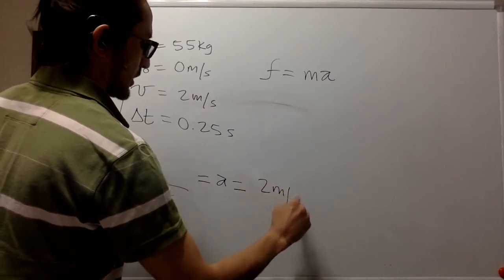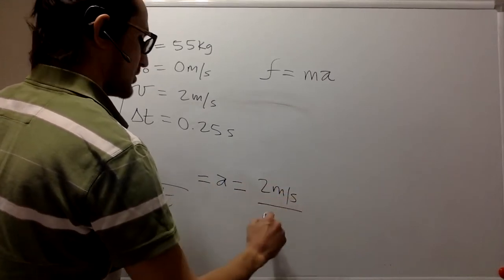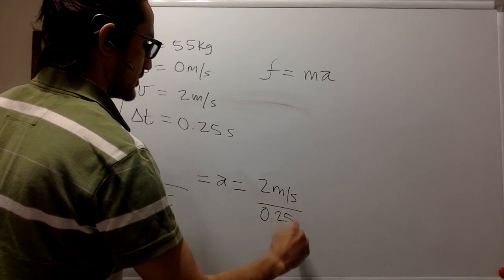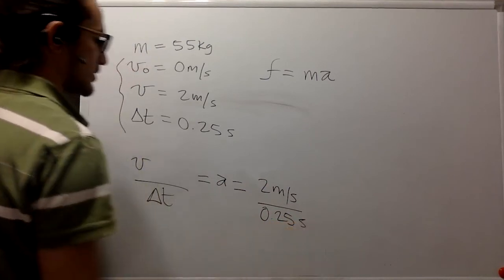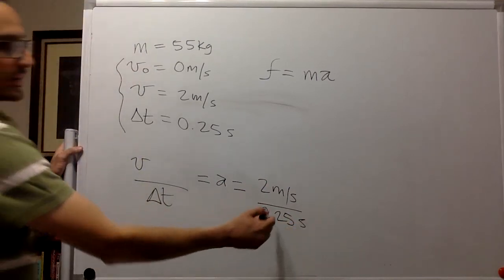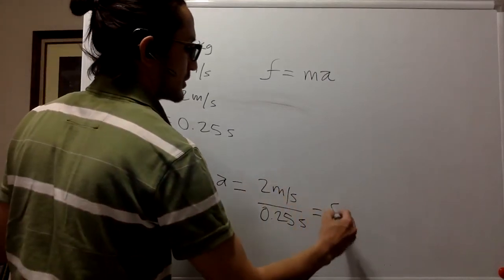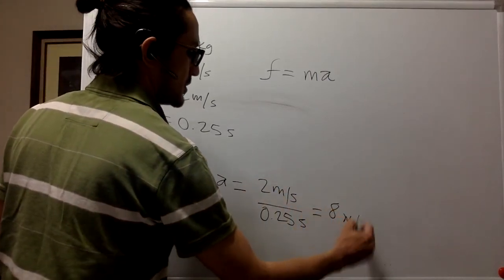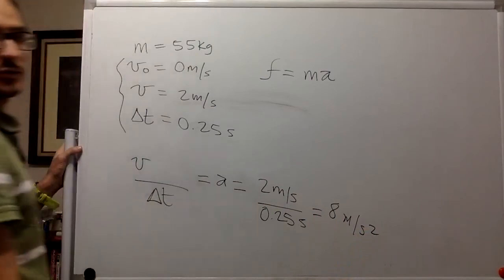So that's two meters per second divided by 0.25 seconds. This is one fourth. So we can put the four over here. It's going to be eight meters per second squared.